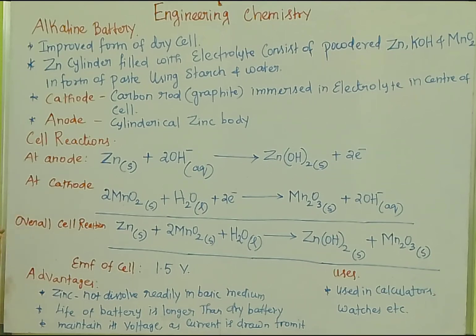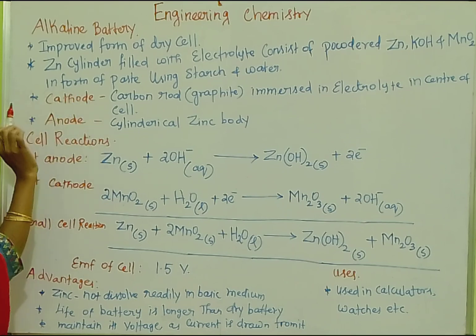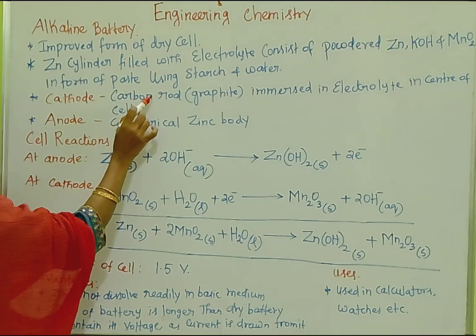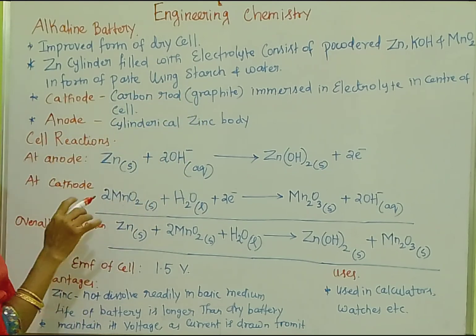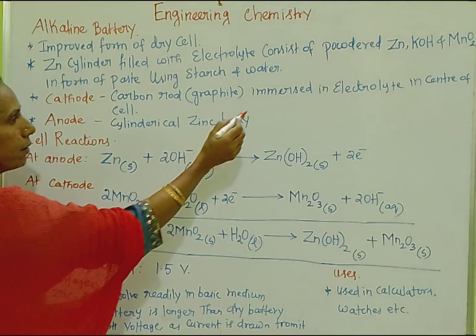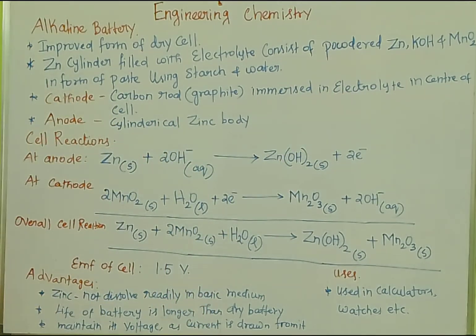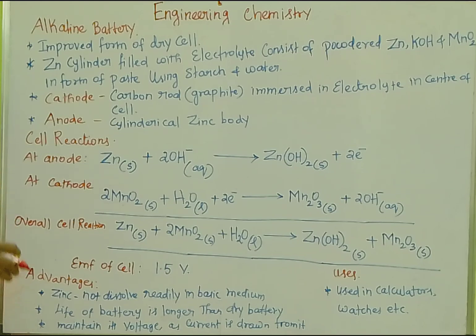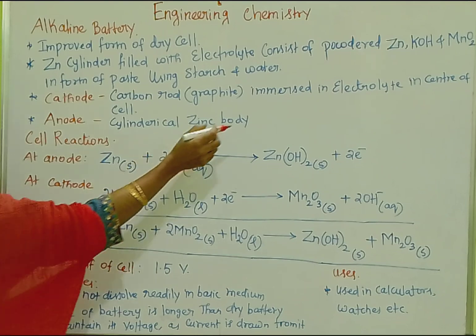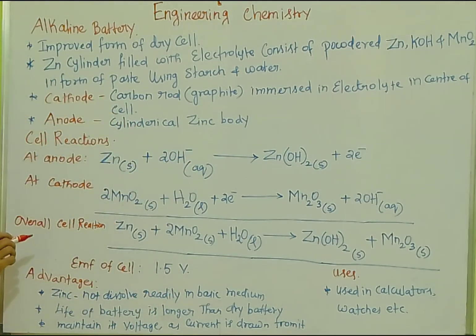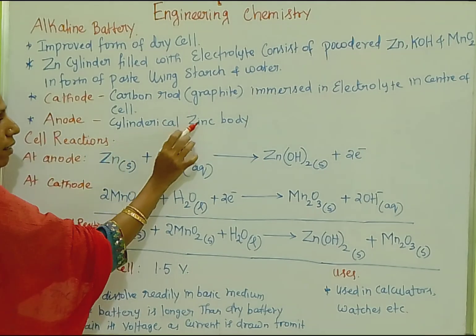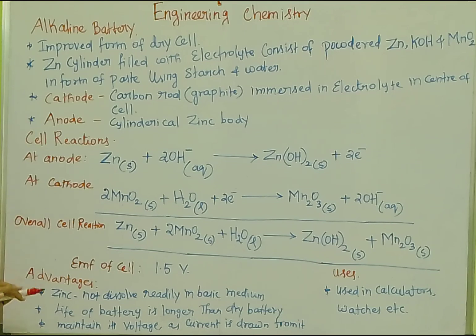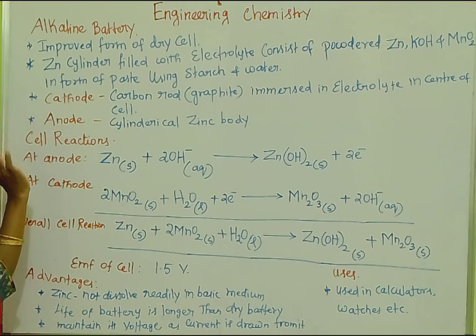In this alkaline battery, the cathode is a carbon rod — that is graphite — immersed in the center of the cell. The anode is the cylindrical zinc body. So the cathode is graphite and the anode is the cylindrical zinc body.